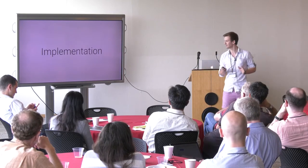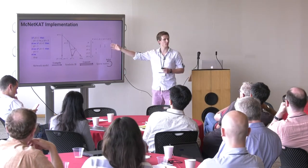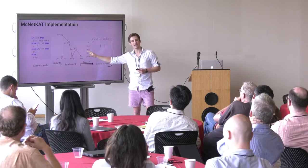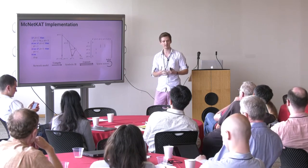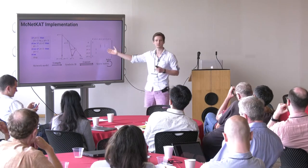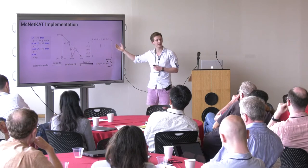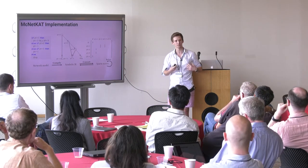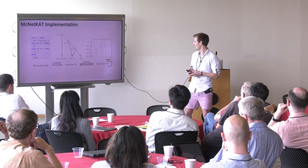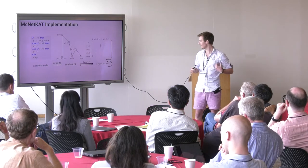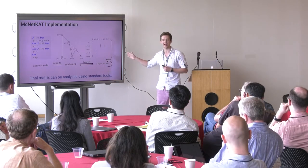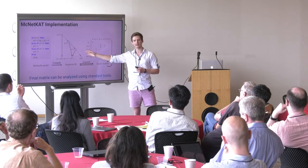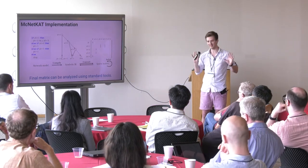Very briefly: how do we implement this? The input to the tool is a network model written in a domain-specific language called Probabilistic NetKAT. We compile it to a symbolic intermediate representation — a compact representation of the ginormous Markov chain — on which we perform analyses. Every once in a while we have to compute the limit of such a Markov chain, and for that we convert to a sparse matrix and run an optimized sparse linear solver. These solvers are very efficient. We can convert back and forth between these two representations and analyze them using either standard linear algebra tools or code that analyzes the symbolic representation directly.